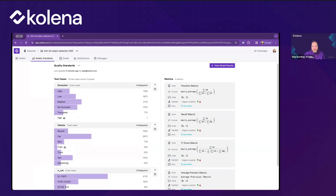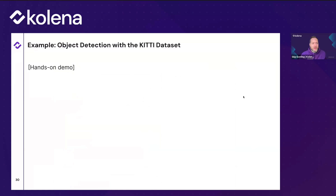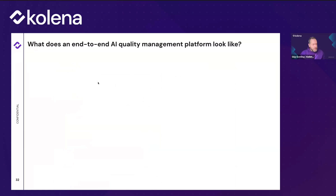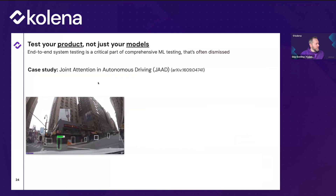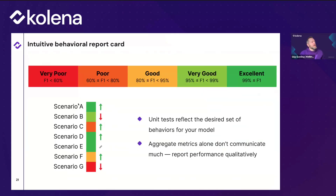The goal is to end up with a quality standard and a behavioral report card like this — a set of test cases representing what you care about most, including product-level metrics. You can see at a glance whether scenarios are green (safe to deploy) or whether there are regressions that need to be addressed. That's the goal: to be able to chase the long tail systematically, robustly, and automatically.